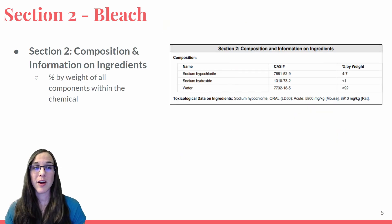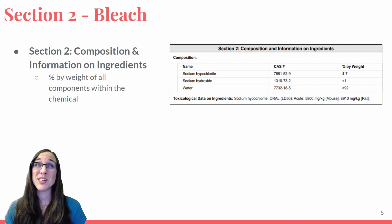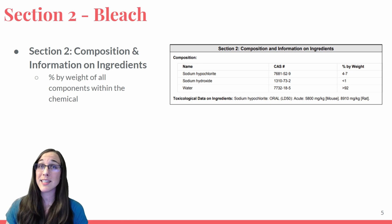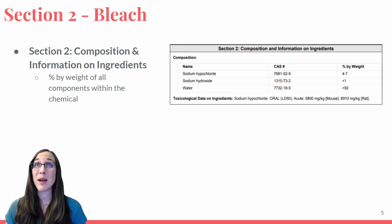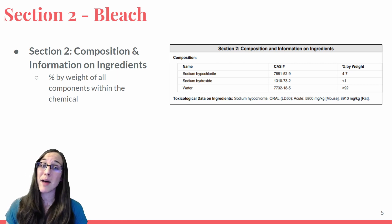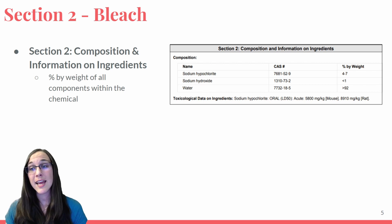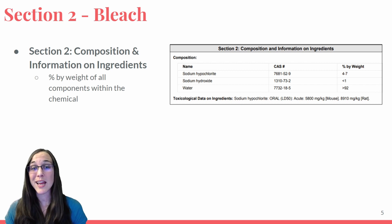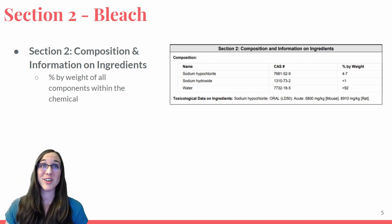Section two of our MSDS for bleach shows the composition and information on the ingredients of that chemical. For bleach specifically, we can see it is 4–7% by weight sodium hypochlorite, less than 1% by weight sodium hydroxide, and greater than 92% by weight of water.